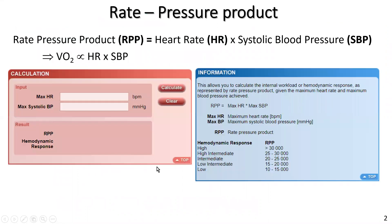It's quite simple to understand rate pressure product. It really just determines the work of the heart, which is really the oxygen consumption of the heart, being proportionate to the heart rate multiplied by systolic blood pressure.